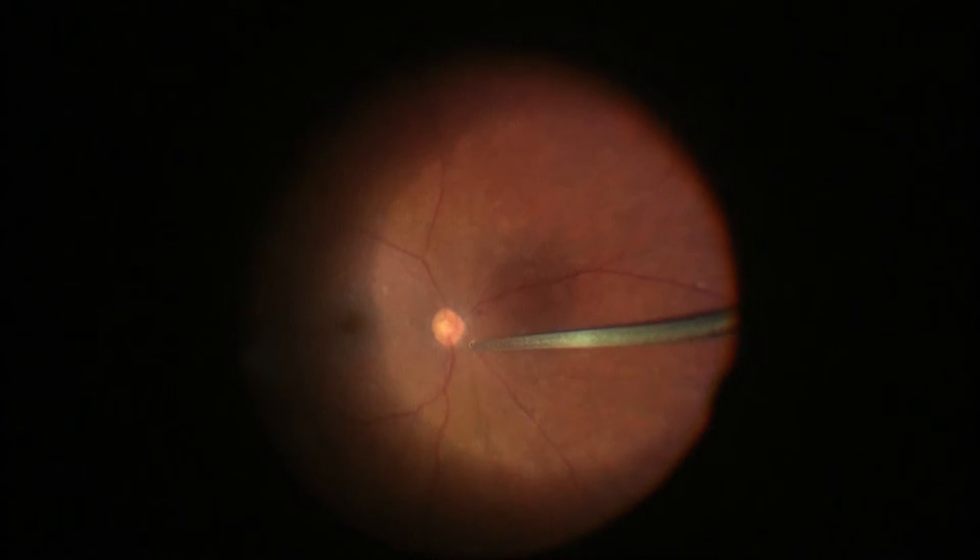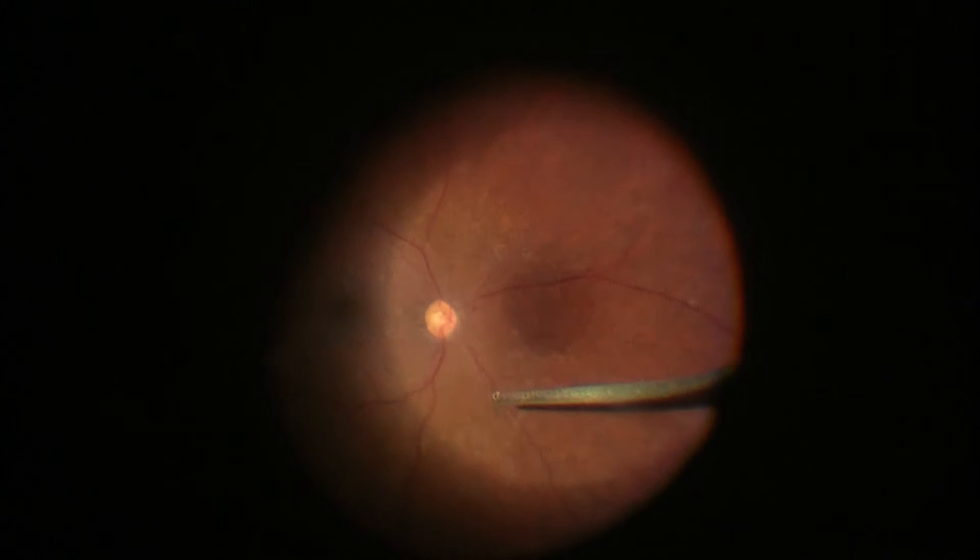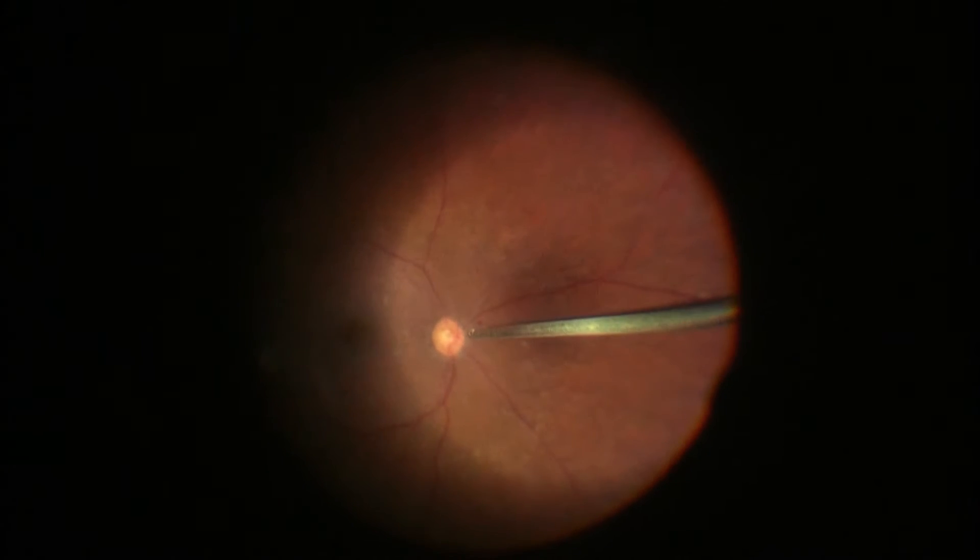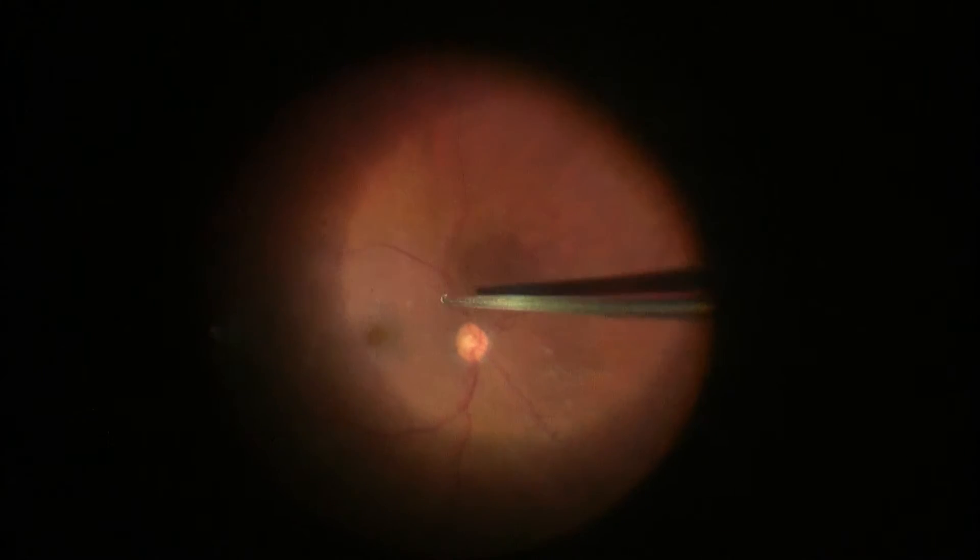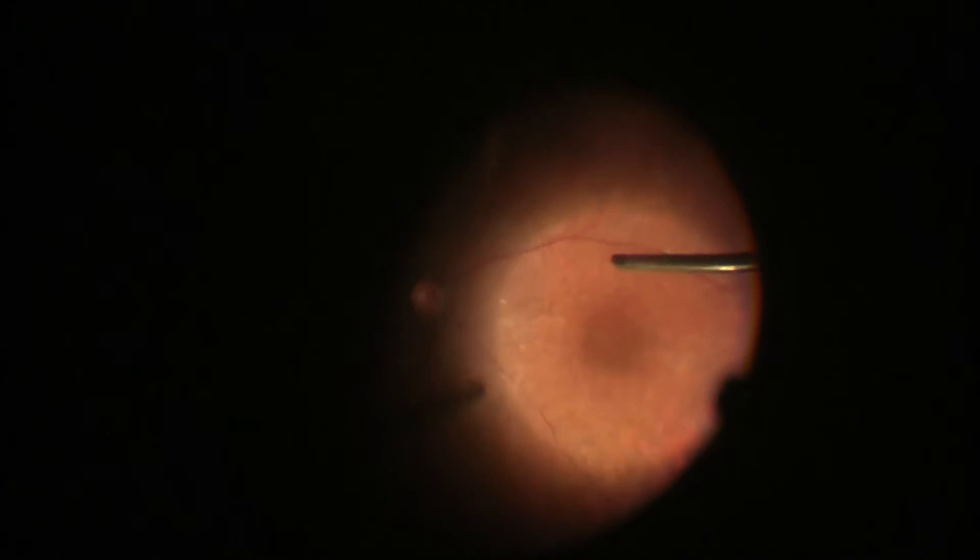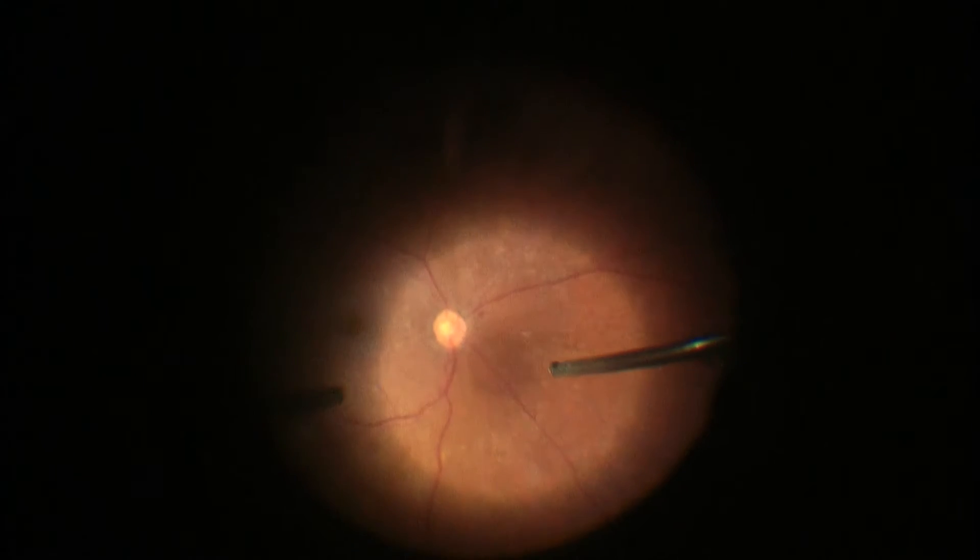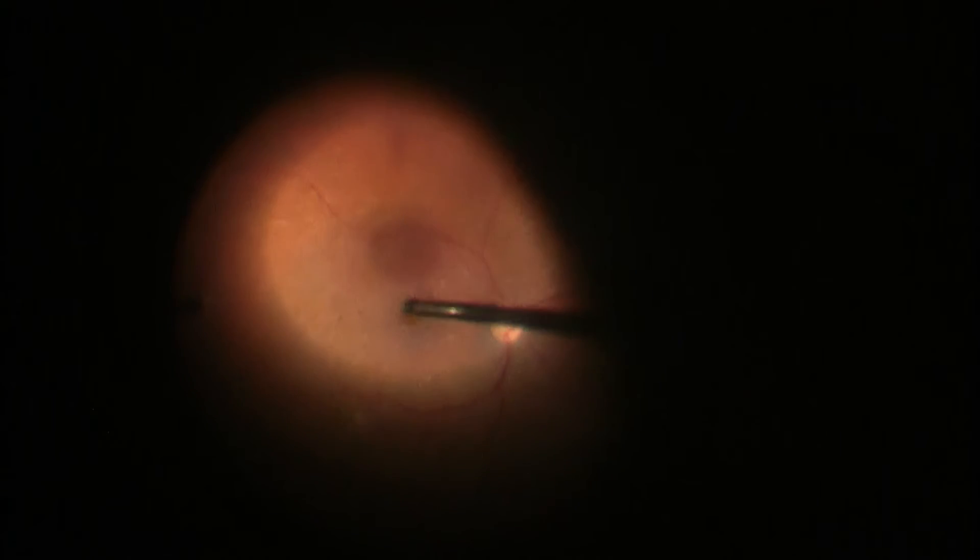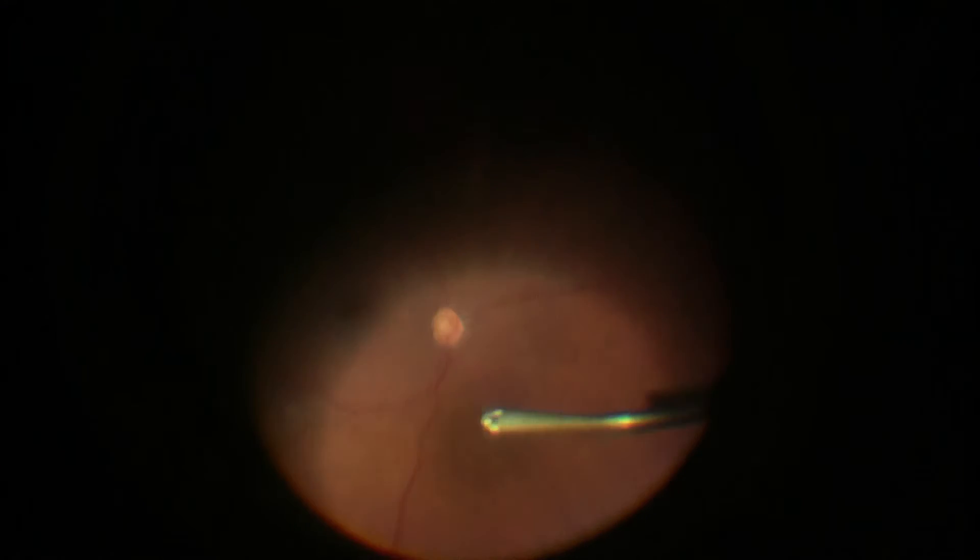Now that we've removed the vitreous, we're going to take a good look at the retina, the macula, the optic nerve. There's a little piece of vitreous still attached to the optic nerve, and we've just cut and removed that there. The retina otherwise looks pretty flat. You can't tell what a patient's visual prognosis is at the time of vitreous surgery, but you can have some idea, and you can tell that this patient has a good shot of doing well.